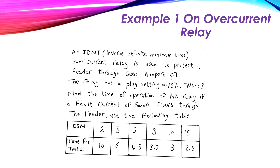The current transformer steps down 500 amperes to 1 ampere — that is its ratio. The relay has a plug setting equal to 1.25, meaning the relay will operate at 1.25 times the rated ampere of the CT secondary. The Time Multiplier Setting (TMS) equals 0.3. Find the time of operation of this relay if a fault current of 5000 amperes flows through the feeder.